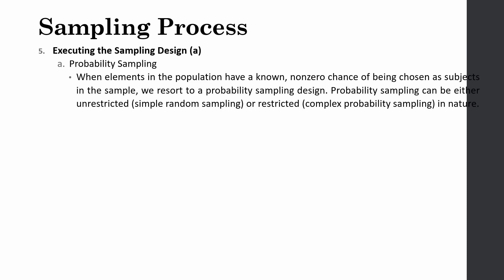Now how do you execute your sampling design? Probability sampling. Let's say you want to choose probability sampling. So what choices do you have? Now when elements in the population have a known, non-zero chance of being chosen as subjects in the sample. So a unit in the population is your element. A unit in the sample is your subject. Now when we want to make sure that the elements in the population have a known and non-zero chance, we have to go for probability sampling design. And in probability sampling design we can either have simple random sampling or restricted, that is complex probability sampling. Now what is unrestricted or simple random sampling? Now how is it done? Simple random sampling.